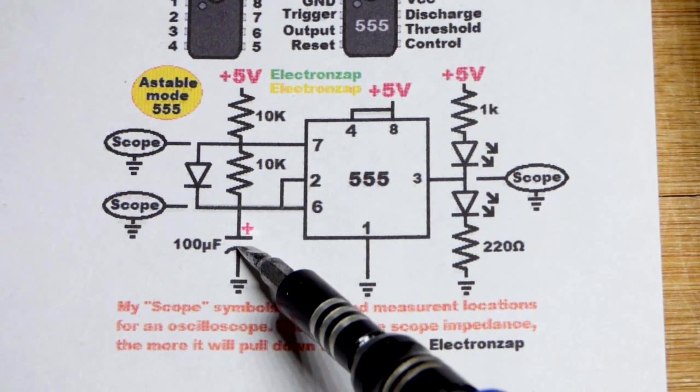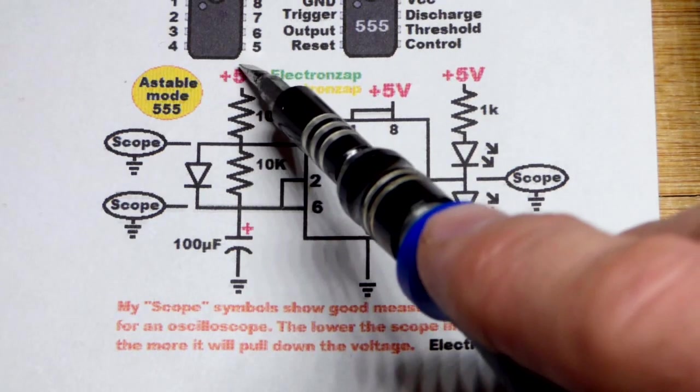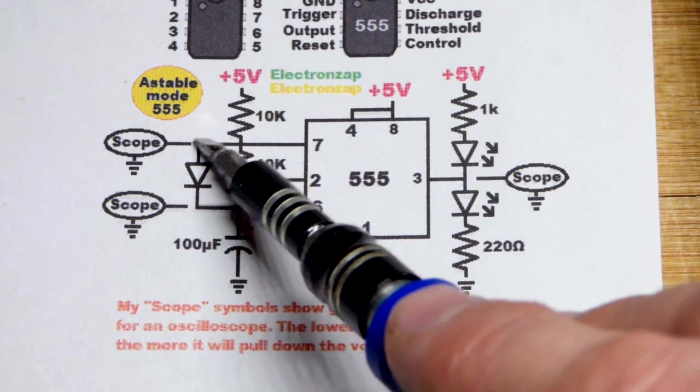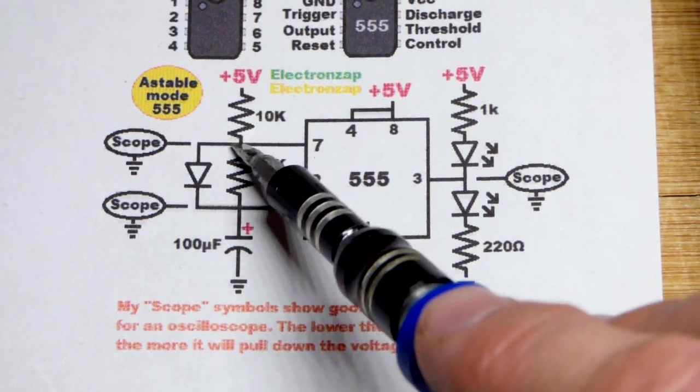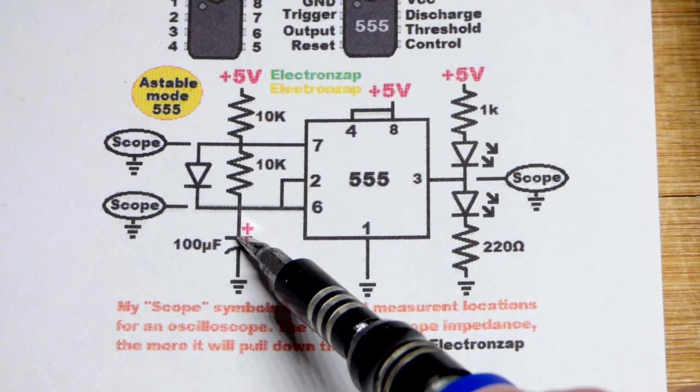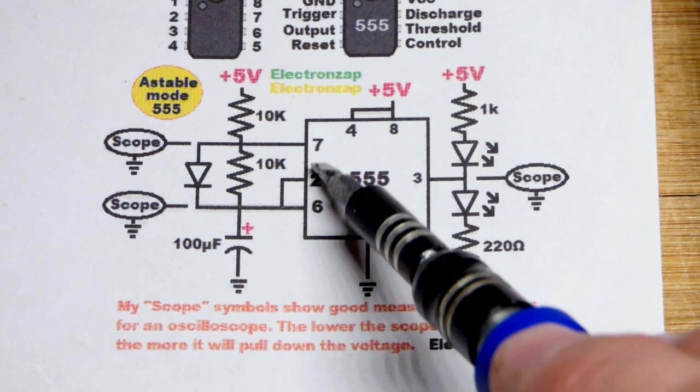The capacitor charges. Current has to go through that resistor, and then it's easier to go through the diode than that resistor. So it's going to go around and charge the capacitor. Once it gets to two-thirds of the supply voltage, pin 6 will see that.